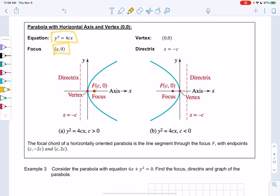So c is now the x value. So my focus will be (c, 0), and then my directrix is still negative c, but it's x = -c. And then my vertex is still (0, 0).